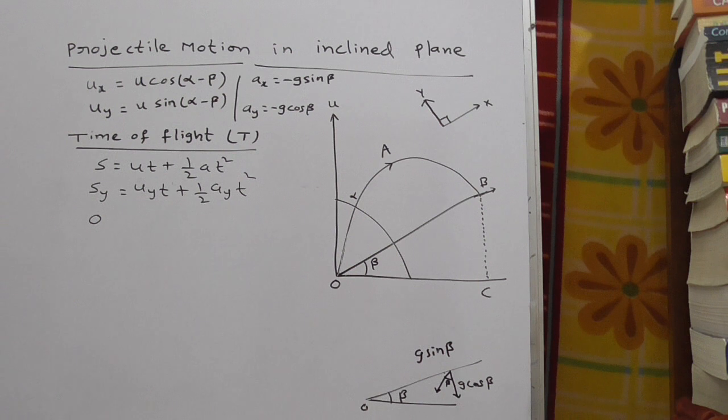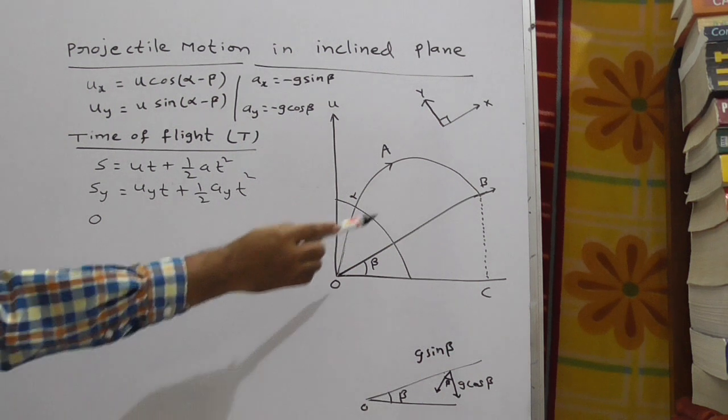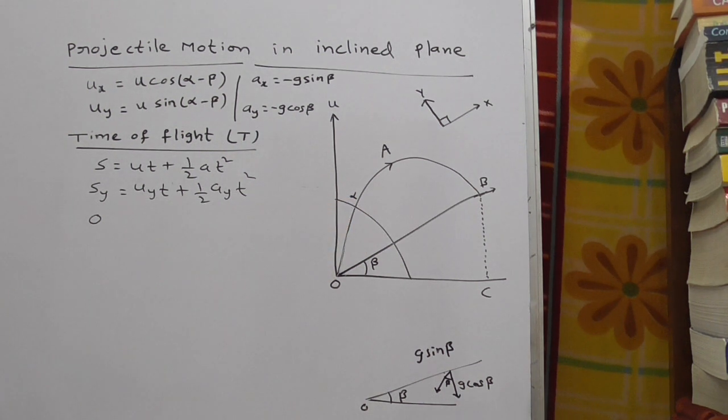At point B, displacement along y direction is 0. Therefore, sy is 0.